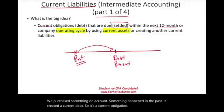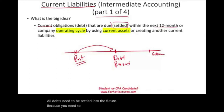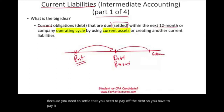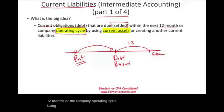All debts need to be settled into the future — you need to pay off the debt. If that debt has to be paid within the next 12 months or the company's operating cycle using current assets, we consider this liability a current liability.